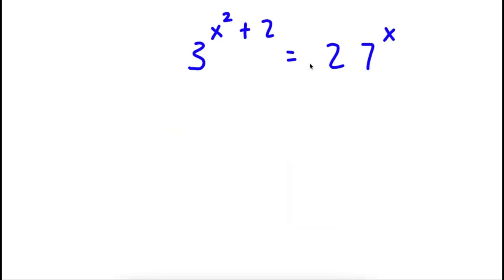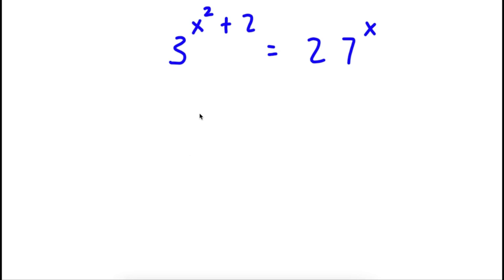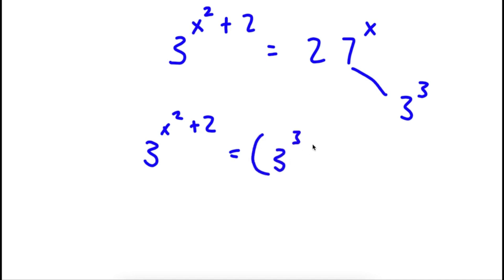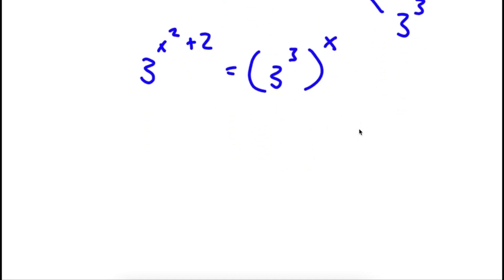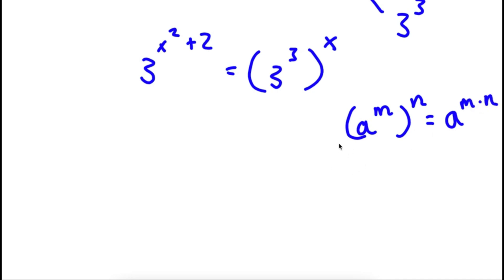So I have 3 to the power of x squared plus 2 is equal to 27 to the power of x. Now the first thing I'm going to do is I'm going to change 27 to 3 to the power of 3, because 27 is equal to 3 to the power of 3. So I get 3 to the power of x squared plus 2 is equal to 3 to the power of 3 to the power of x. Now if I have something in the form a to the power of m to the power of n, this is equal to a to the power of m times n. So in this case, x squared plus 2 is equal to 3x.